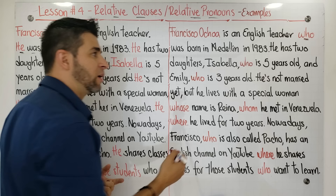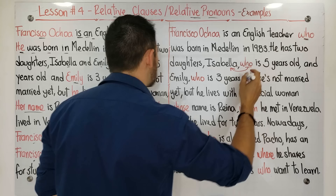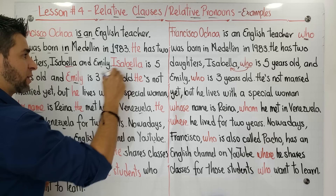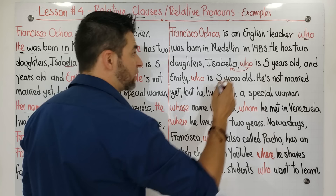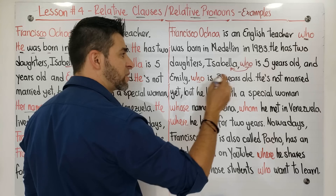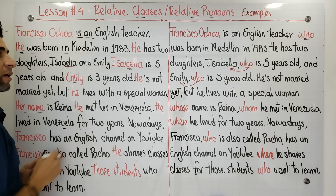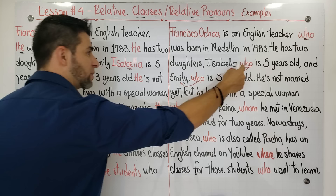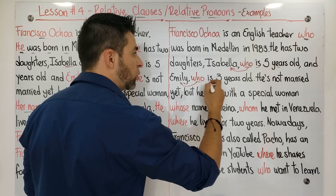In this case, 'who' is talking about Isabela and is replacing a subject. Remember that in the first story, Isabela was repeated twice. But here I just mention Isabela once and use a relative pronoun that refers to her again. The same happens with Emily: 'who is three years old' — this 'who' is talking about Emily. So 'who' is replacing one instance of Emily, and the other 'who' is replacing one instance of Isabela.